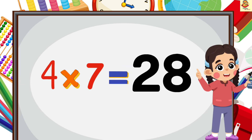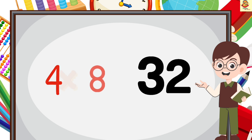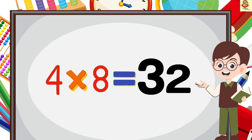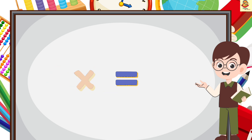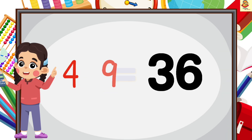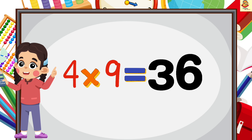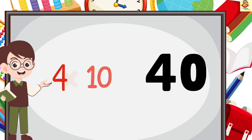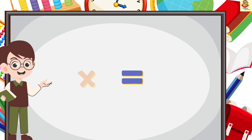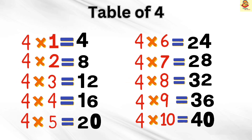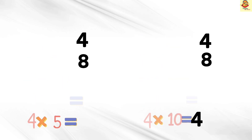4 7's are 28, 4 8's are 32, 4 9's are 36, 4 10's are 40. Well done! Great!